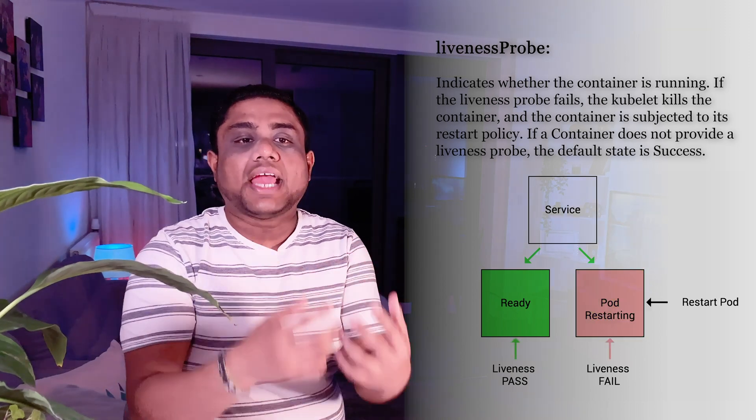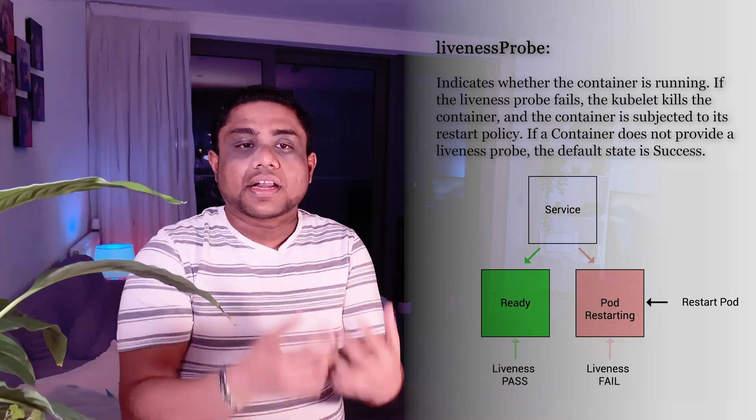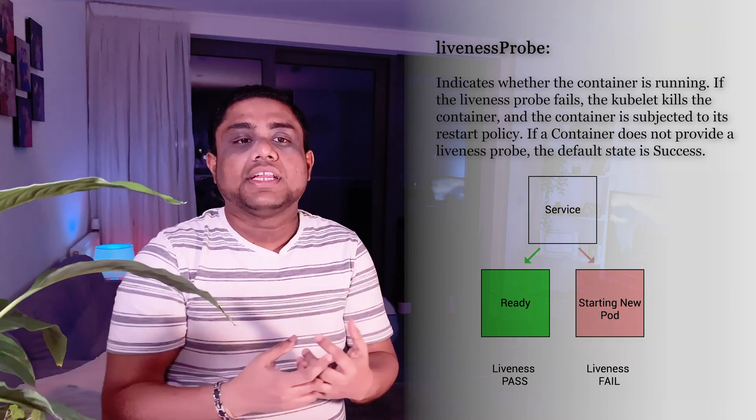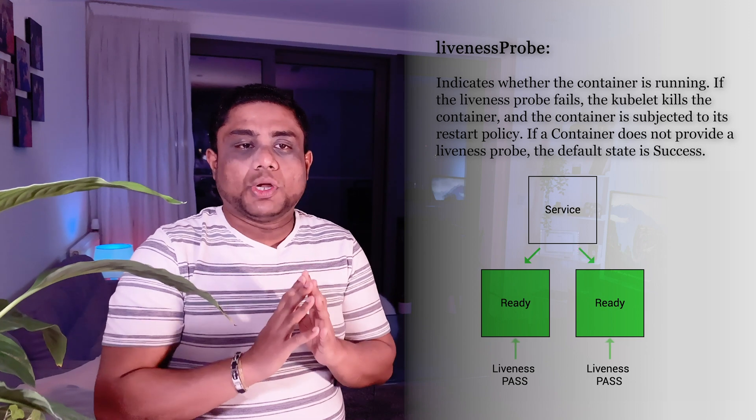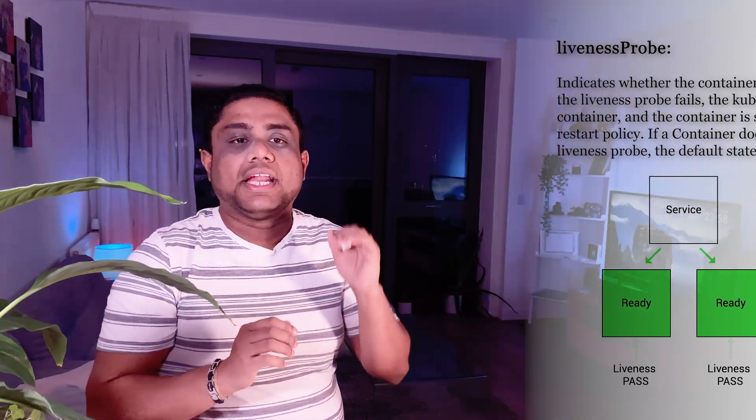To receive an adequate response to the request through the liveness probe, the Kubelet can do three types of checks to ensure that the pod is not only running but also can serve the traffic through the application running inside the pod.